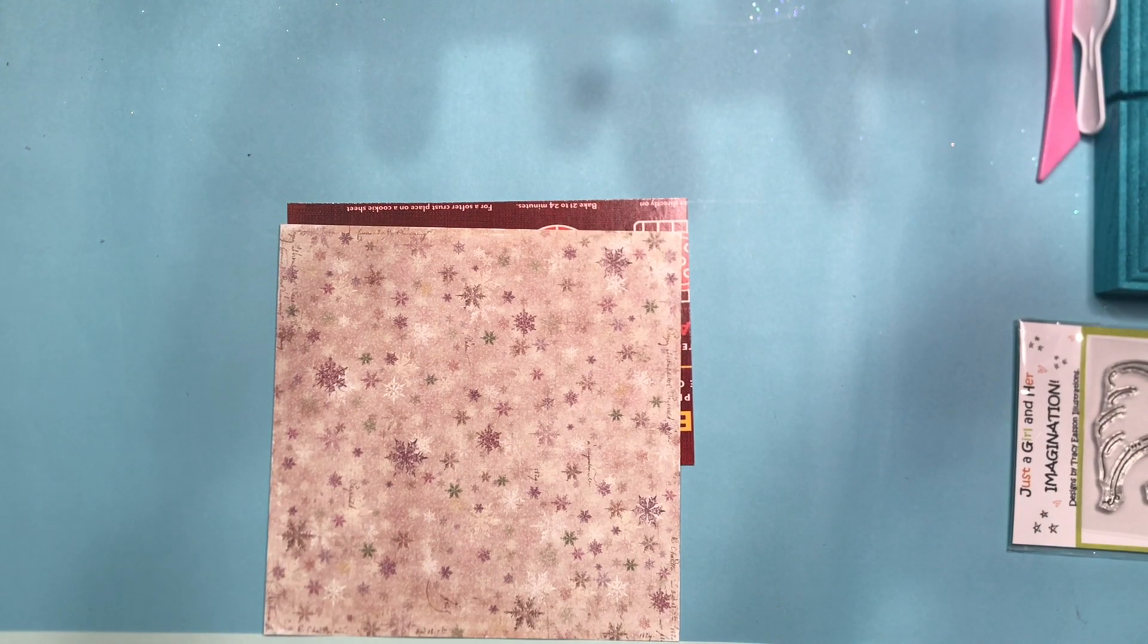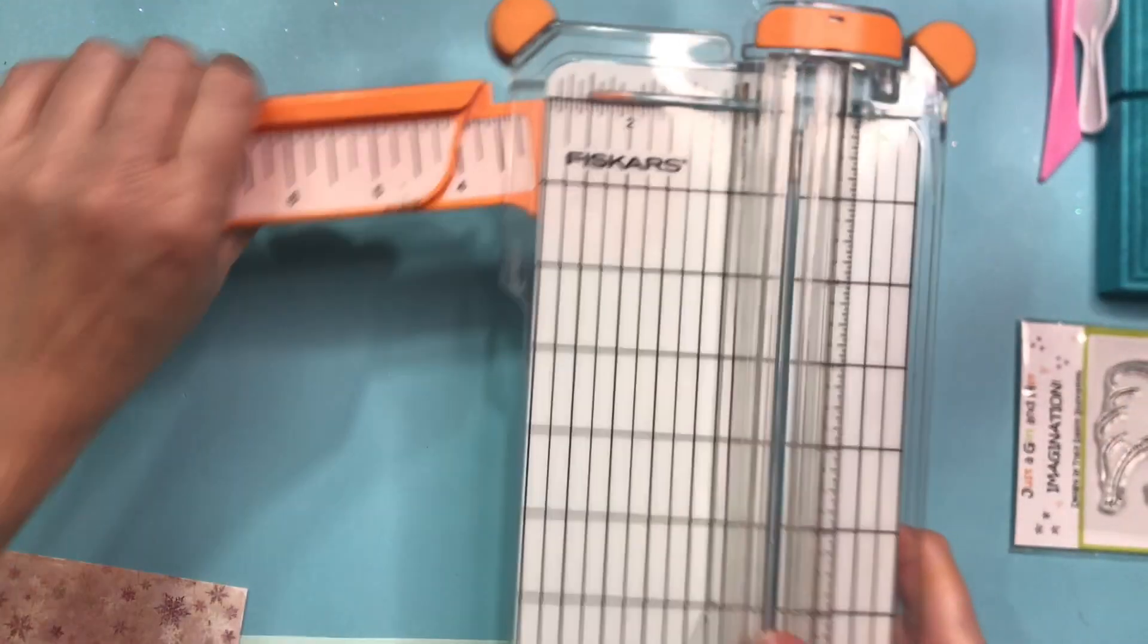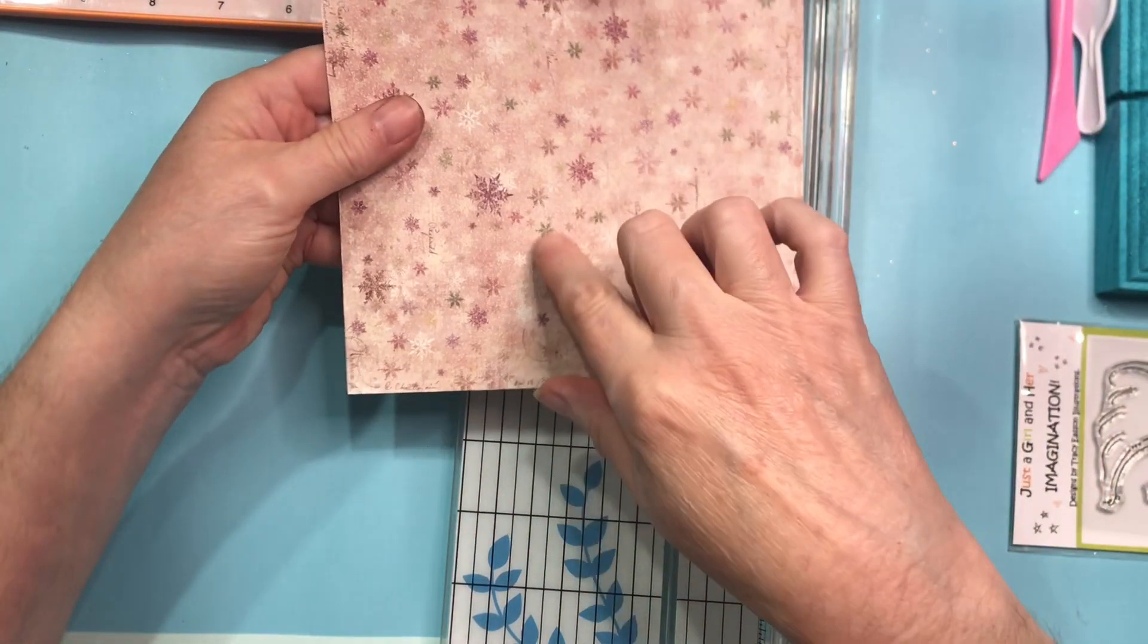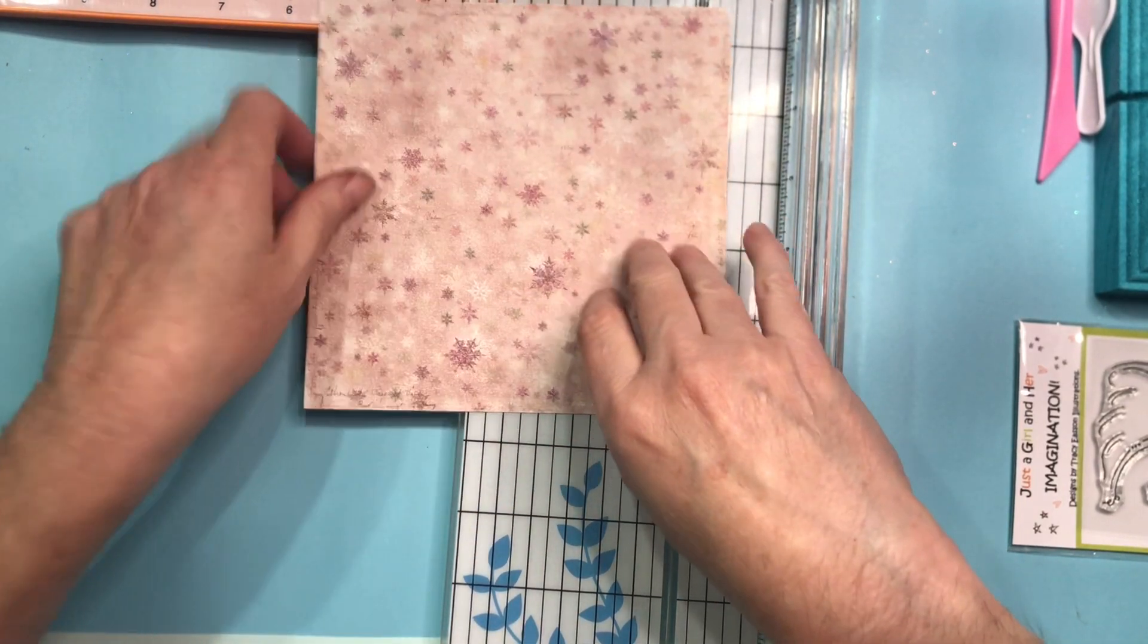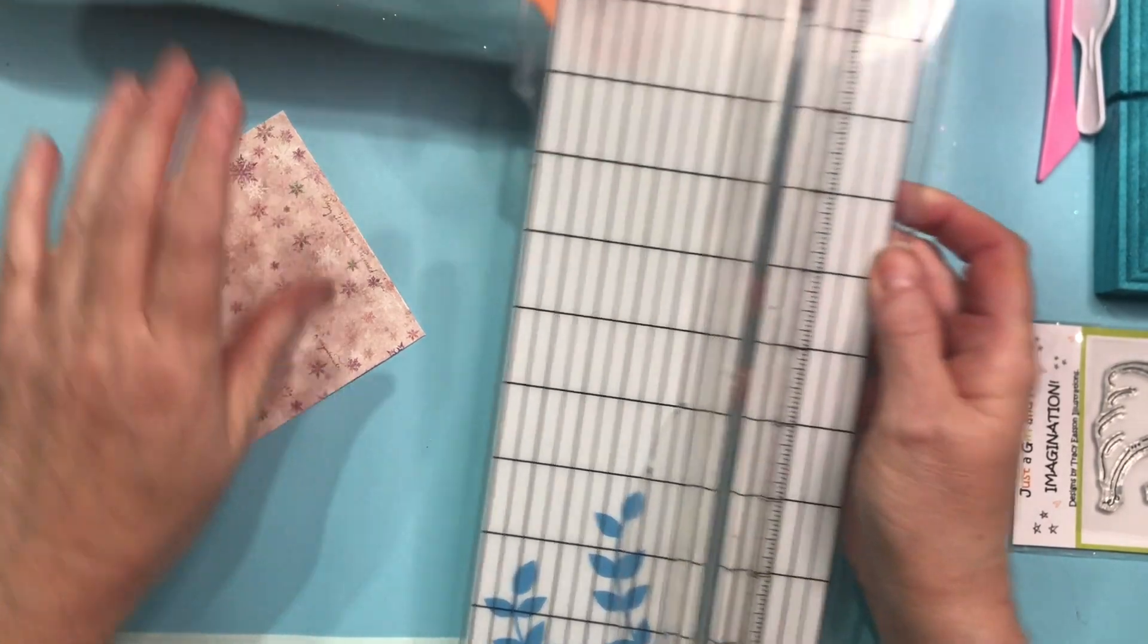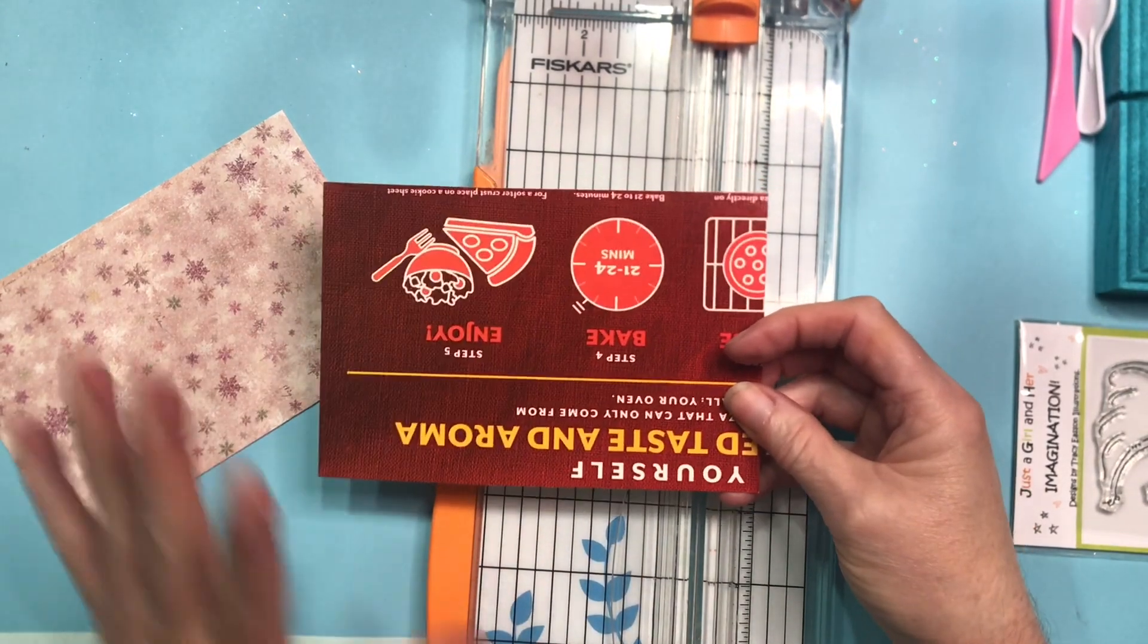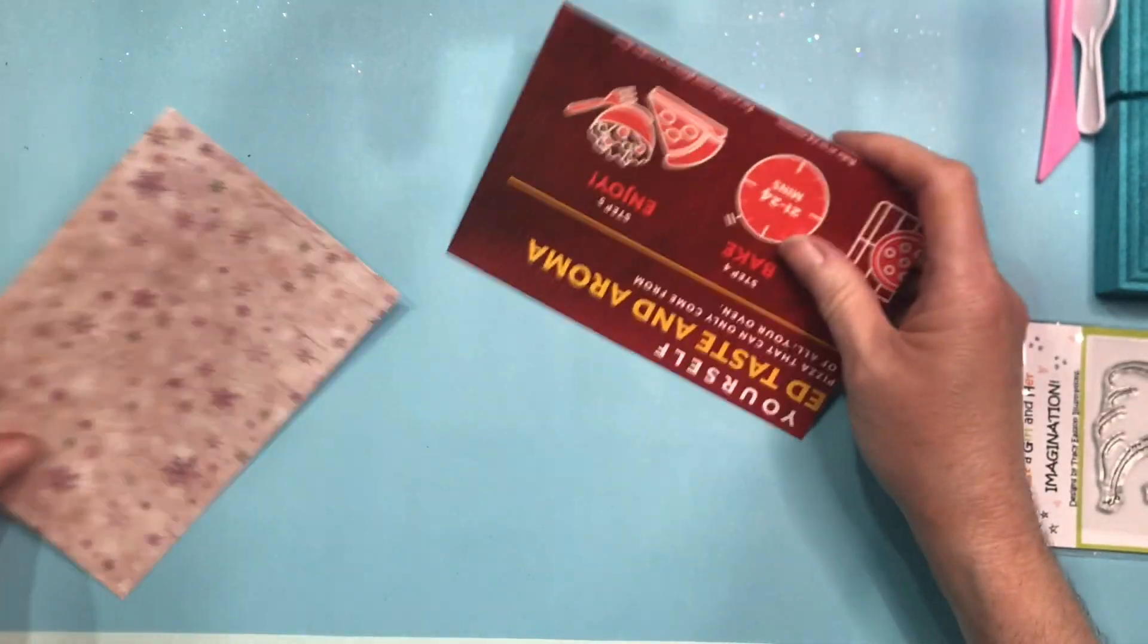So we're going to start with, this is a four by six postcard so we need to cut this paper down. And while I'm doing that, my filming corner is almost completely back together. I am so excited. I need to change blades in both my trimmers apparently. So I'm going to go here and go to the four inch mark and trim this off.